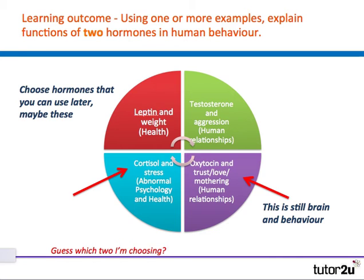The next learning outcome is: using one or more examples, explain functions of two hormones in human behaviour. Students really do have to learn two for this learning outcome. Choose hormones that you can use later depending on your options. If teaching health, you might want to teach leptin and cortisol. If teaching human relationships, you might want to teach testosterone and oxytocin. I'm going to choose cortisol and oxytocin.